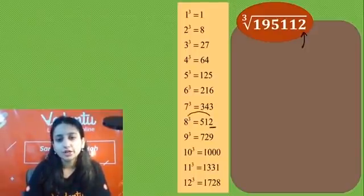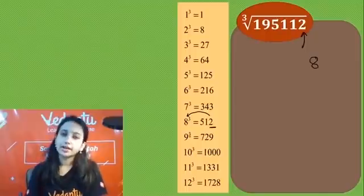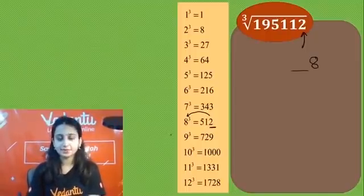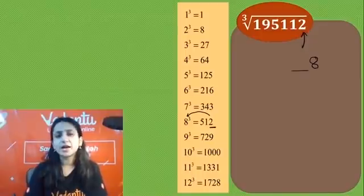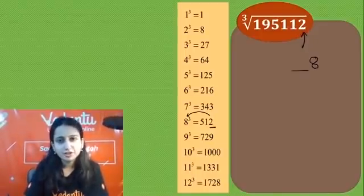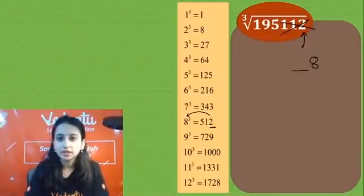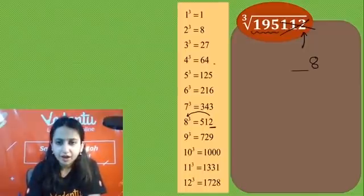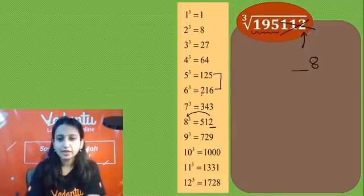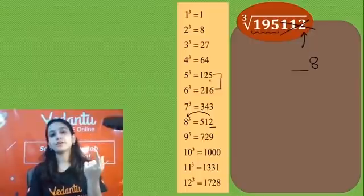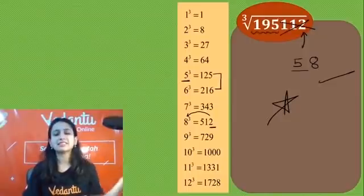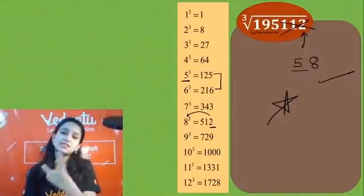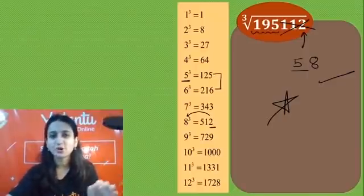Let's start! The last digit is 8, and 8 corresponds to 2. Now discard the last three digits — what remains is 125. 125 lies between 64 and 125. Take the smaller one: 5. So the answer is 52. This won't even take you 3 seconds — very easy method!